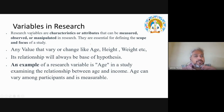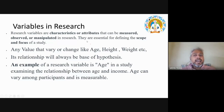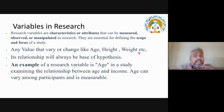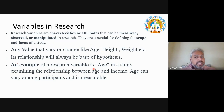Variables vary and are changeable. They are measurable, observed, or manipulated in research. Any value that varies or changes — like age, height, weight — these are all variables in research. The relationship between variables will always be the base of a hypothesis. For example, age is a research variable. When examining the relation between age and income, age can vary and it is measurable among participants.